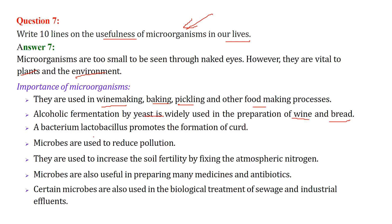Alcoholic fermentation is used in making wine and bread. Lactobacillus bacterium is very important - it converts milk into curd, which is very beneficial for the stomach and the body. Microbes are also very useful in controlling pollution. Fixing atmospheric nitrogen to maintain soil fertility is another key role - organisms like Rhizobium help in this. Medicines and antibiotics are also made by microbes. Microbes are also used to treat sewage and industrial effluents.